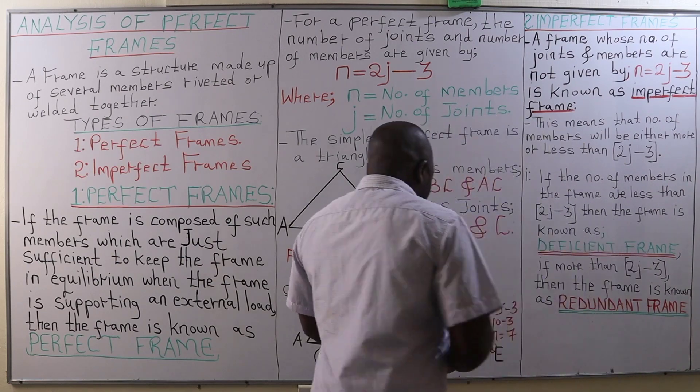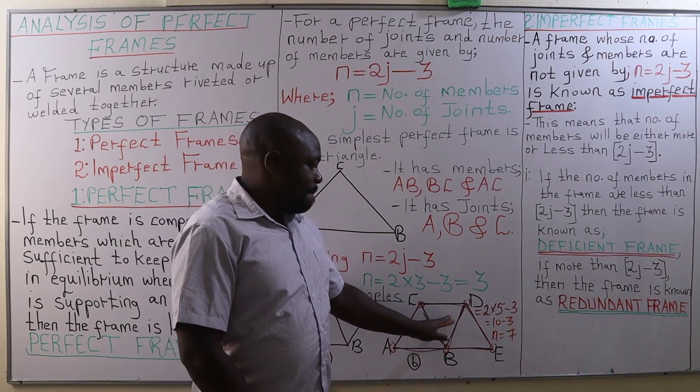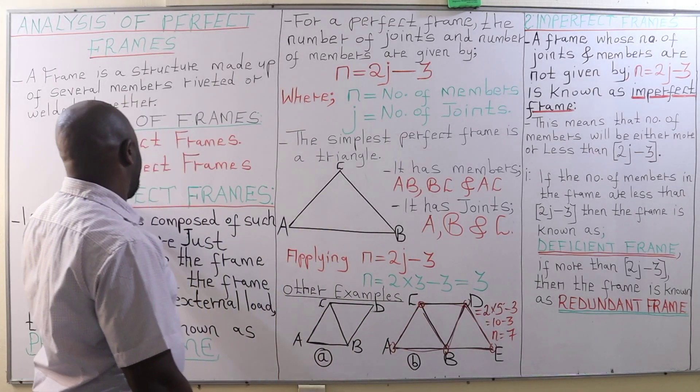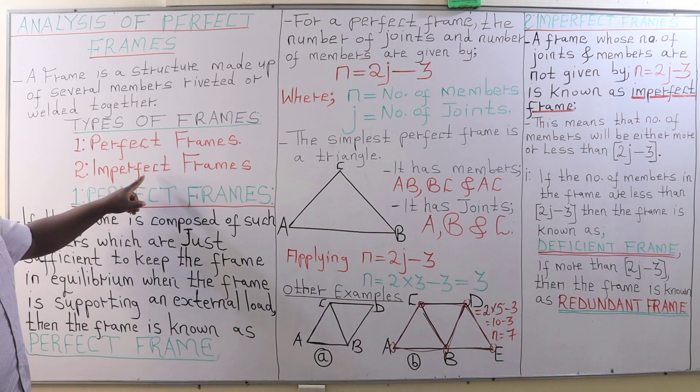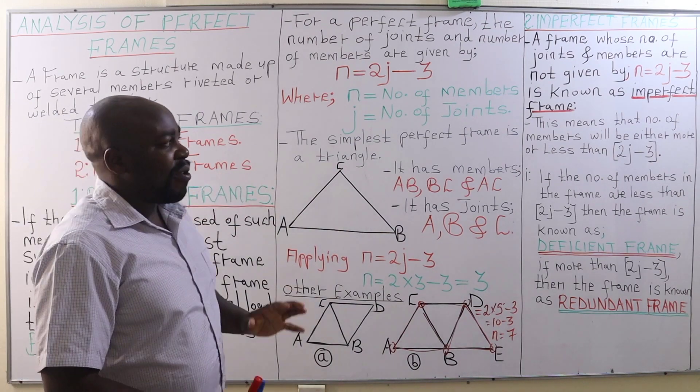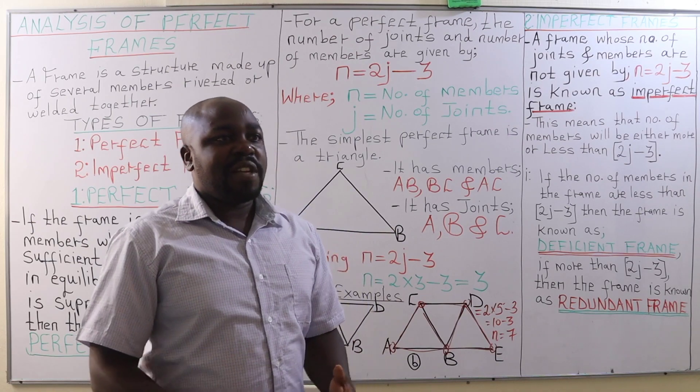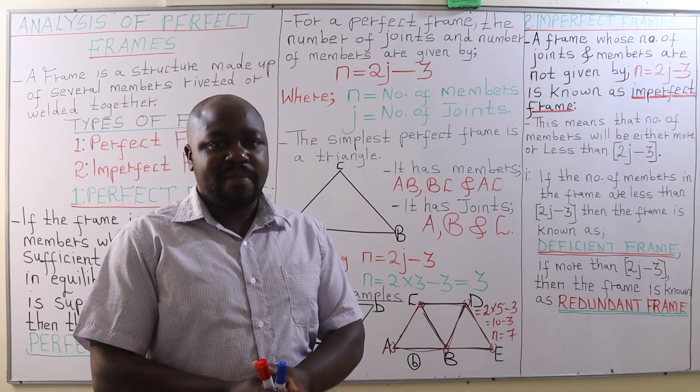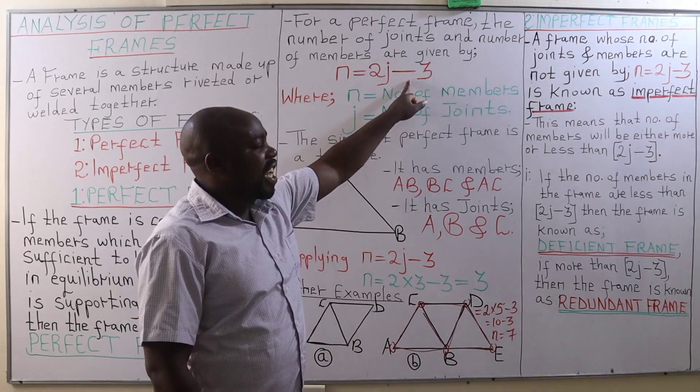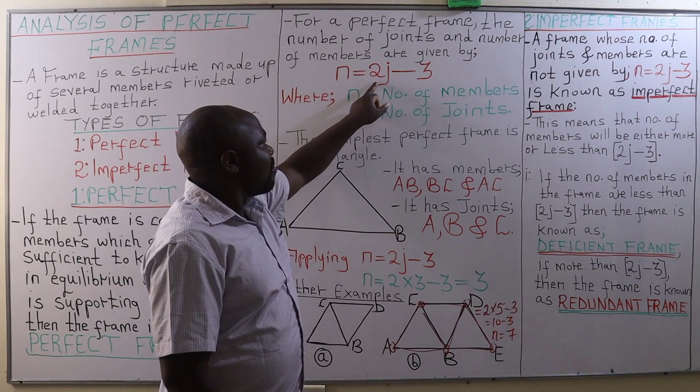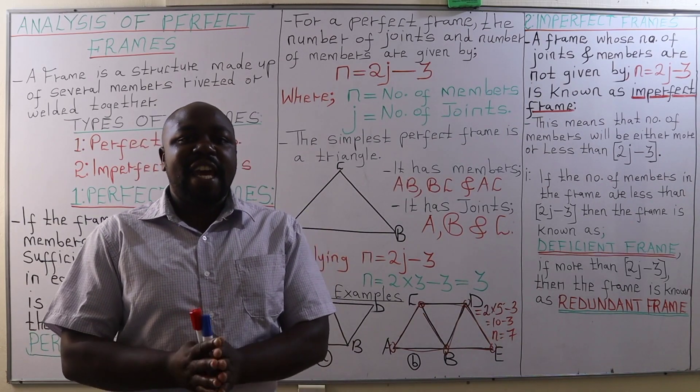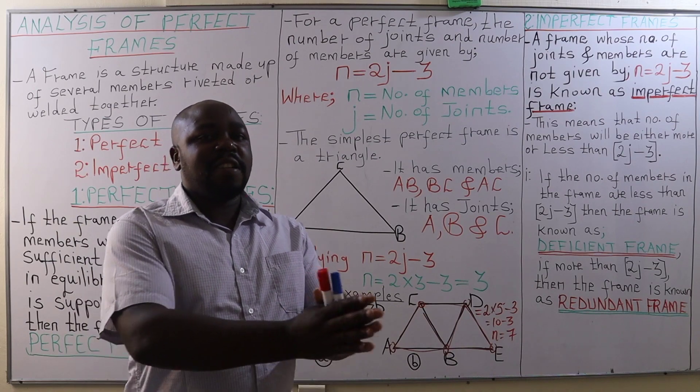Now, after looking at perfect frames, the next type of frame that we have is what we call imperfect frames. When do we refer to a member as an imperfect frame? Definitely, if a member doesn't fulfill this relation of n equals 2j minus 3, then we are going to refer to that frame as an imperfect frame.